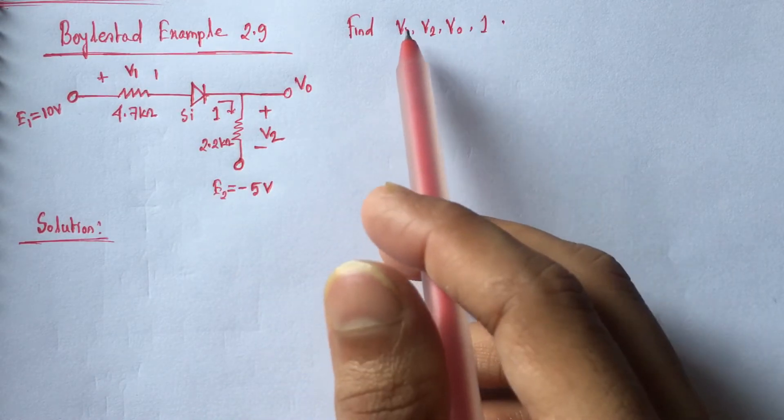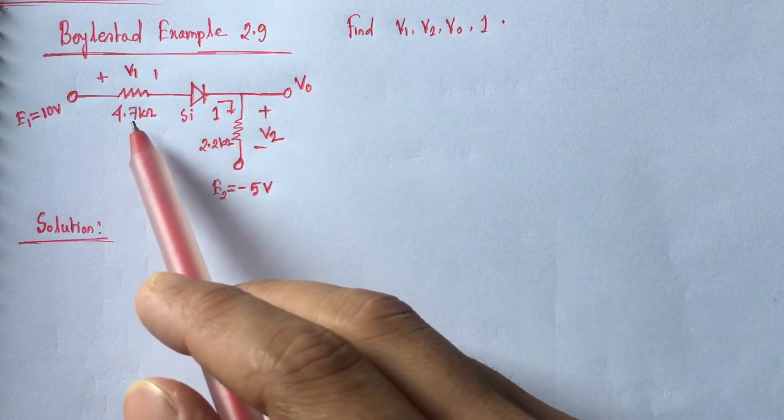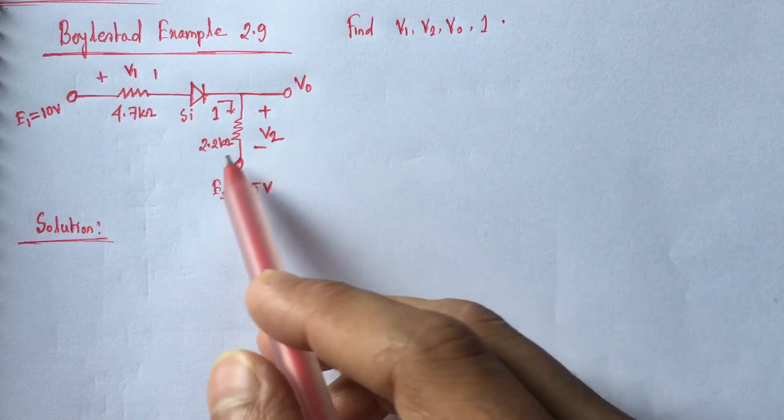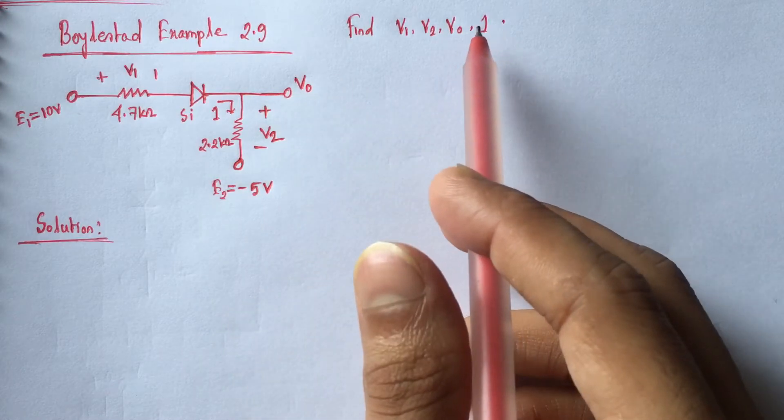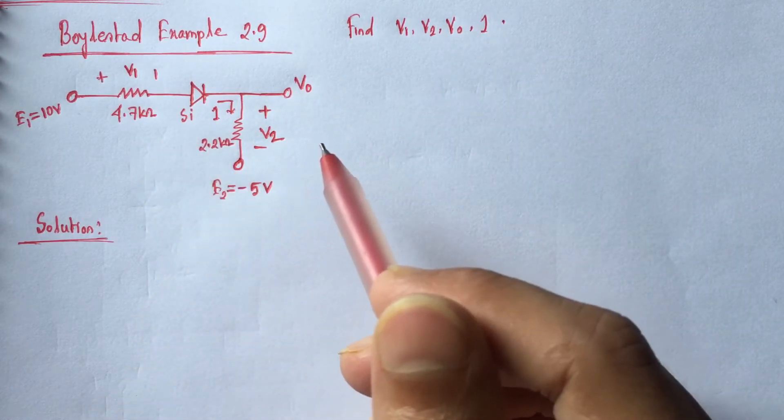Here we have to identify the voltage V1 across this 4.7 kilo ohm resistance, V2 across this 2.2 kilo ohm resistance and V0 which is at this point, and current I throughout the circuit.